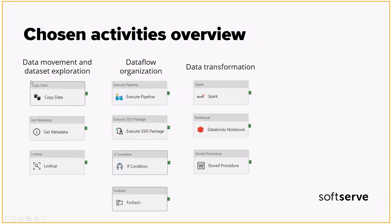Следующий тип — активности трансформации данных. Они тесно связаны с запуском действий на внешних платформах. Spark Activity — это запуск Spark Job в HD Insight Cluster. Databricks Notebook — это запуск Databricks Notebook в Databricks Cluster. Stored Procedure — это запуск хранимой процедуры в SQL Server. Внутри этих активити я указываю, что хочу запускать эту процедуру или этот ноутбук, и он выполняет нужную работу.